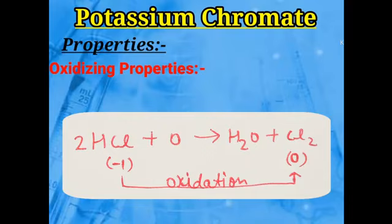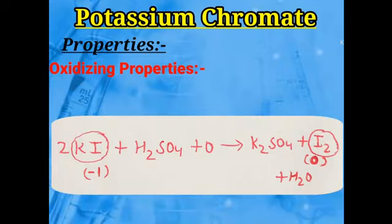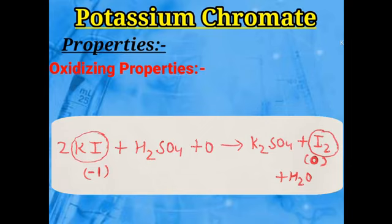The last example is the reaction of KI (potassium iodide). In the presence of H₂SO₄ (acidic conditions) and oxygen, KI reacts to form potassium sulfate and I₂ (iodine molecule). In KI, iodine's oxidation state is −1, and in the I₂ molecule it becomes 0. So oxidation of iodine occurred — from −1 to 0.